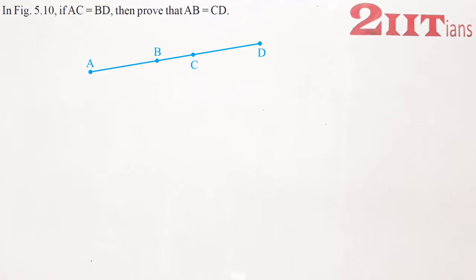In figure 5.10, if AC equals to BD, then prove that AB equals to CD.